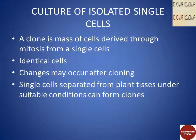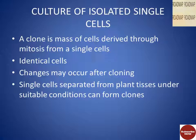Now, what is a clone? A clone is a mass of cells, all of which are derived through mitosis from a single cell. The cells of the clones are expected to be identical with regard to genotype or karyotype, and changes in the cells may occur after cloning. Single cells are separated from plant tissues under suitable conditions and they can form clones.